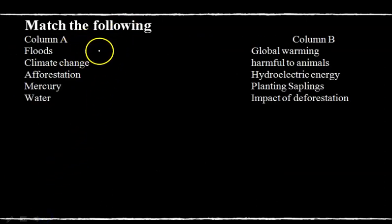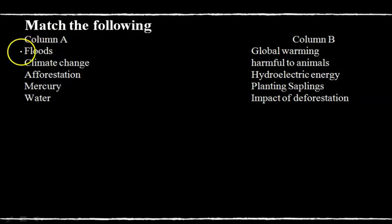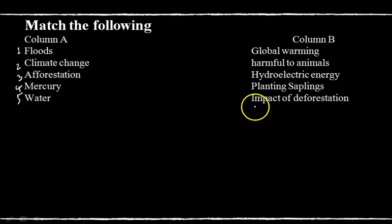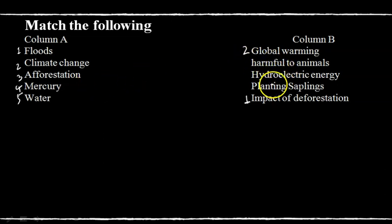The next exercise is match the following. Global warming — climate change, because global warming causes climate change. Harmful to animals — mercury, since mercury is harmful to animals. Hydroelectric energy — water, as water is the source of hydroelectric energy. Planting of saplings — afforestation. Impact of deforestation is the major cause of floods and natural disasters.